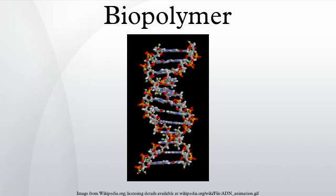Biopolymers versus synthetic polymers: a major defining difference between biopolymers and other polymers can be found in their structures. All polymers are made of repetitive units called monomers. Biopolymers often have a well-defined structure, though this is not a defining characteristic. The exact chemical composition and the sequence in which these units are arranged is called the primary structure, in the case of proteins.